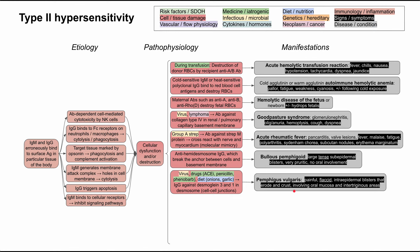In pemphigus vulgaris, the other skin-related type 2 hypersensitivity disorder, you'll have antibodies against desmoglein-3 and desmoglein-1 in the desmosome — the cell-to-cell junctions. When those break, you'll have painful, flaccid, intraepidermal blisters that tend to erode and crust, and this involves the oral mucosa first before spreading to intertriginous areas. Triggers include viral infections, drugs like ACE inhibitors, penicillin, and phenobarbital, and diet — onions, garlic, and leeks have been associated with pemphigus vulgaris.